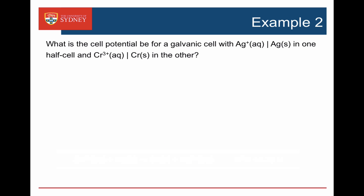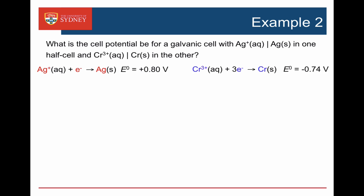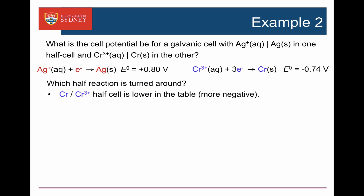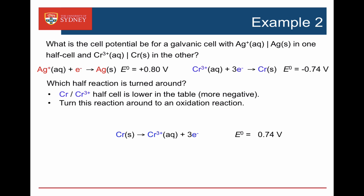Final example: what's the cell potential when we combine a silver ion/silver half cell with a chromium 3+/chromium half cell? We write down the two reduction half cell potentials: silver ions going to silver metal is plus 0.8 volts, and chromium 3+ going to chromium metal is minus 0.74 volts. We turn around the one lower in the table — the more negative one — which is clearly the chromium at minus 0.74. We turn it around so it becomes an oxidation reaction: chromium metal goes to chromium 3+, and instead of minus 0.74 for reduction, it's plus 0.74 for oxidation.